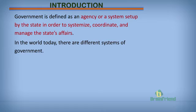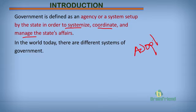In the course of our study, we have known that government is a body or agency set up by a state or country to systemize, coordinate, and manage the state's affairs. As a result, different countries and states, in order to avoid anarchy — which is a state of lawlessness that brings chaos — actually adopt different types of government.